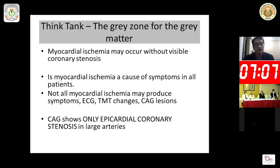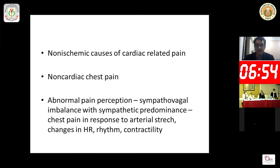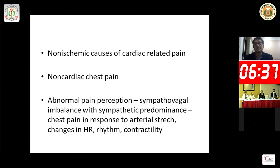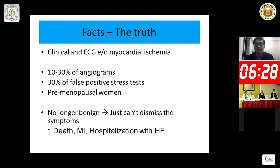Unfortunately, with a coronary angiogram we cannot see microvascular dysfunction or lesions in smaller arteries or subendocardial arteries. There can be patients with non-ischemic causes of cardiac-related pain, non-cardiac chest pain, or abnormal pain perception — like sympathovagal imbalance with sympathetic predominance — where they have perception of arterial stretch caused by changes in heart rate, rhythm, and contractility. This topic is very important because 10 to 30 percent of angiograms fall in this range, and we label 30 percent of positive stress tests as false positive if the coronary angiogram shows no obstructive coronary artery disease.